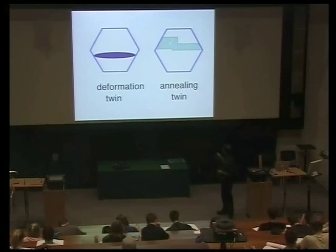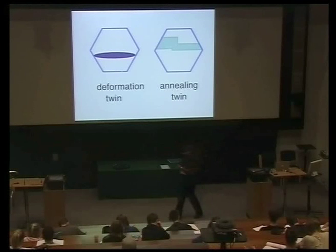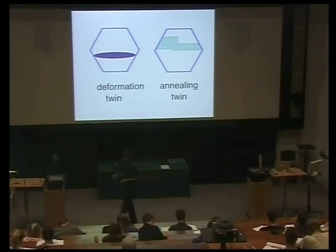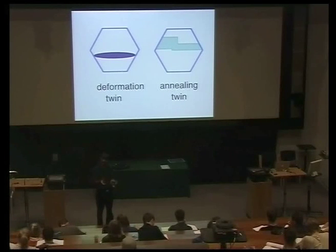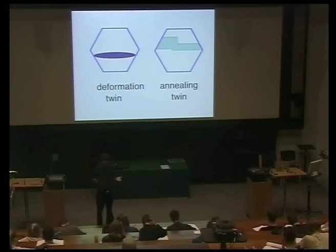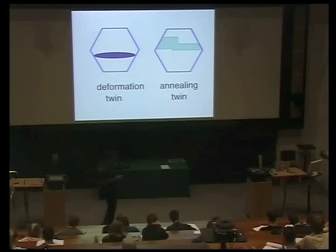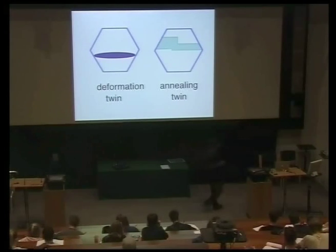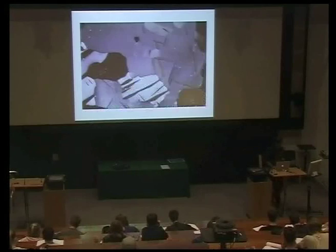Annealing twins occur because when you severely deform particular metals and recrystallize them, you're growing new grains, and you happen to get some grains which are in twin orientation. They are not deformations — they are simply growing in that orientation. You can easily distinguish them by looking at them.